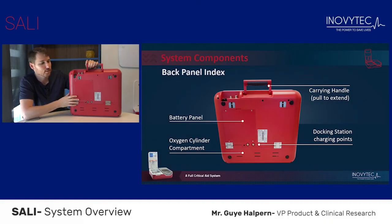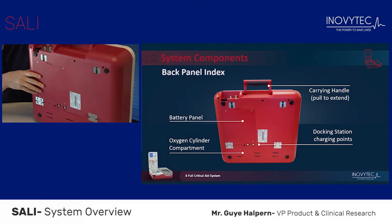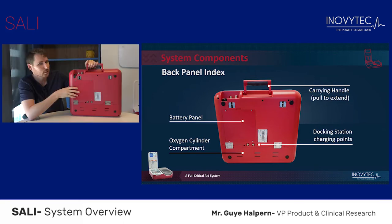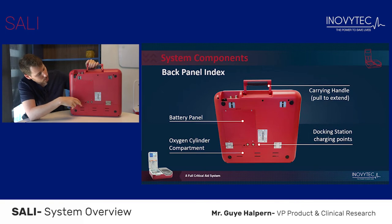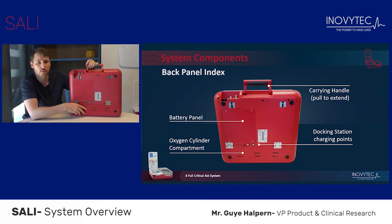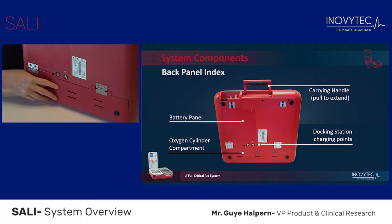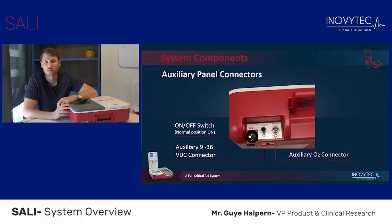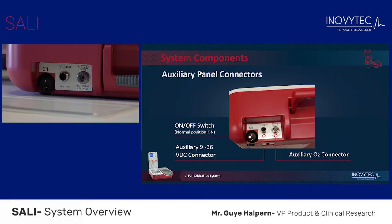The back panel is comprised of the following elements. The first is the battery panel; inside you will find the rechargeable battery. Next are the two charging points from which the SALI receives its power supply. Next is the oxygen cylinder compartment, inside which you will find the oxygen cylinder. The auxiliary panel is where you will find the on/off switch button, the auxiliary O2 connector, and the auxiliary DC connector.